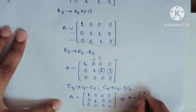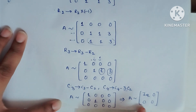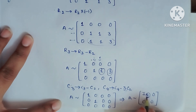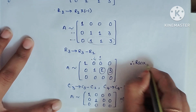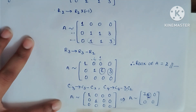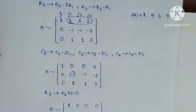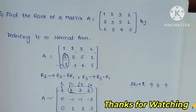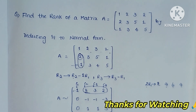Now we can write this matrix as I₂ with zeros — a 2×2 identity matrix embedded in the larger matrix. By the definition of normal form, the rank equals the order of the identity matrix obtained. Therefore, rank of A = 2. In this way we can find the rank of the matrix using normal form. I will attach a snapshot here so you can use it for your reference. Thank you for watching.